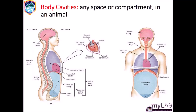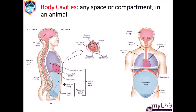On the anterior, we have the thoracic cavity, shown in dark blue, where we have the lungs. We have the pericardial cavity where we have the heart. We have the diaphragm that separates the upper part from the lower abdominal cavity. Below that is the pelvic cavity. The abdominal cavity and pelvic cavity are referred to together as the abdominopelvic cavity. Together with the thoracic and pericardial cavities and the diaphragm, they form the ventral body cavity.